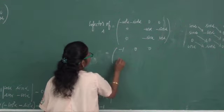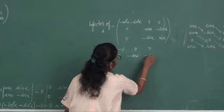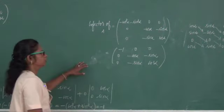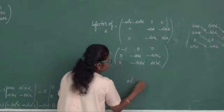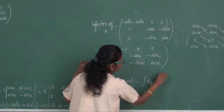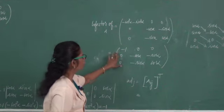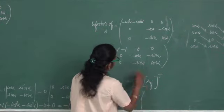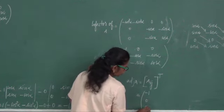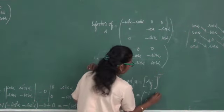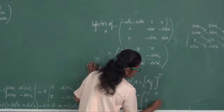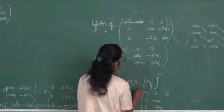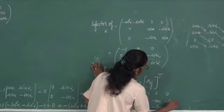Adjoint of A equal to: taking the transpose, rows become columns. So adjoint of A equals: minus 1, 0, 0 / 0, minus cos alpha, minus sin alpha / 0, minus sin alpha, cos alpha.